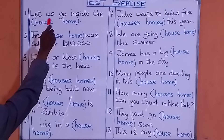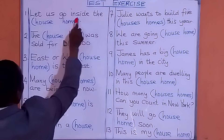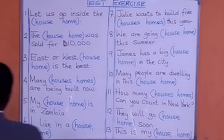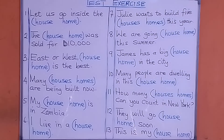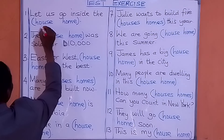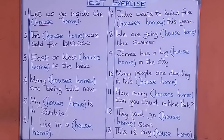Number one: 'Let us go inside the ___.' We are going to write 'house' there. Let us go inside the house.